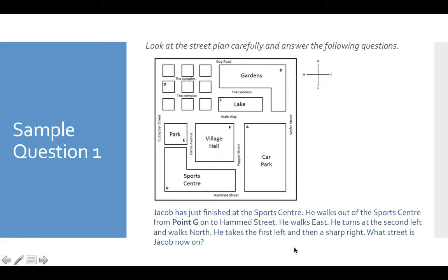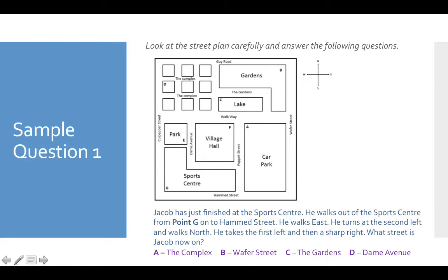So here's the first question. Jacob has just finished at the sports centre. He walks out of the sports centre from Point G onto Hammond Street. He walks east — east is towards the right. He turns at the second left and walks north, up Wafer Street. He takes the first left and then a sharp right. What street is Jacob now on? So as you can see, it's the second left from coming out of the sports centre onto Hammond Street — one, two — so you're going up here, walking north, taking the first left and then a sharp right. You would be on the gardens, which would be answer C.